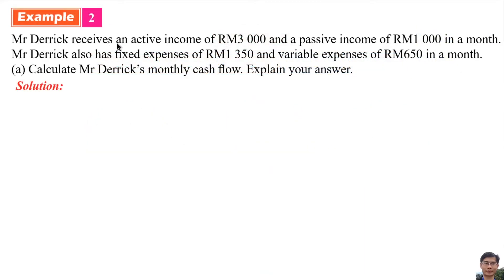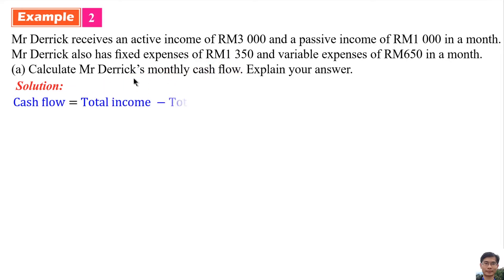In Example Two, Mr. Derrick receives an active income of 3,000 ringgit and a passive income of 1,000 ringgit per month. He also has fixed expenses of 1,350 ringgit and variable expenses of 650 ringgit per month. The question asks us to calculate Mr. Derrick's monthly cash flow. The formula for cash flow is total income minus total expenses.